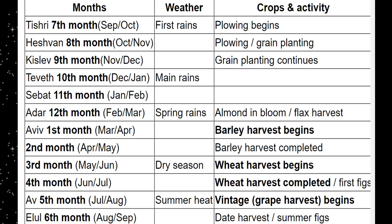The rain is over and gone. The early rain was Pentecost. Since Pentecost there's been some moderate rain. Now we are in the time of the latter rain — the spring rains. And the barley harvest is somewhere between January and April, between Sabbat and Aviv, between the eleventh month and the first month.